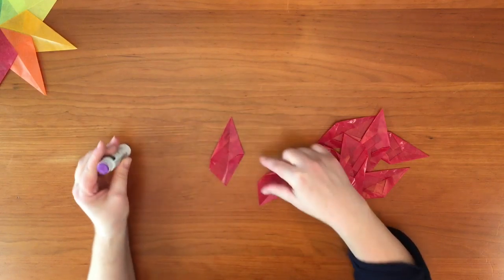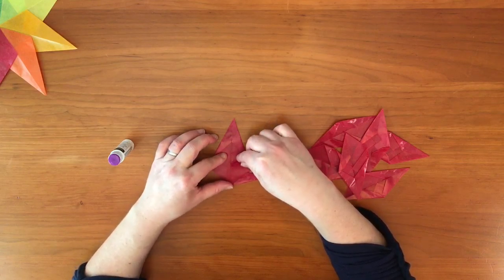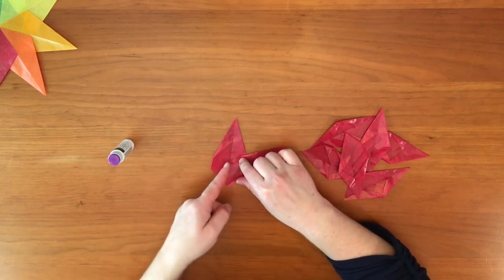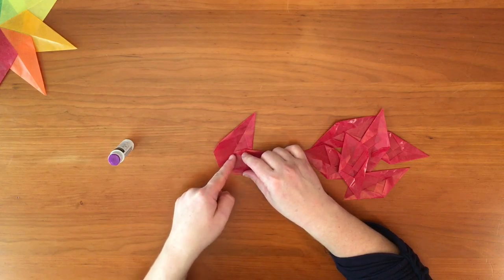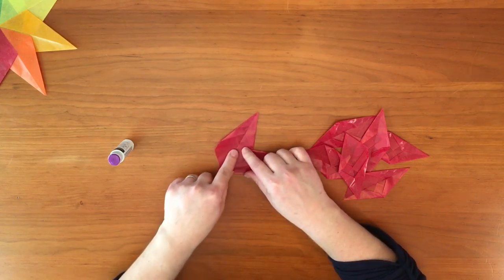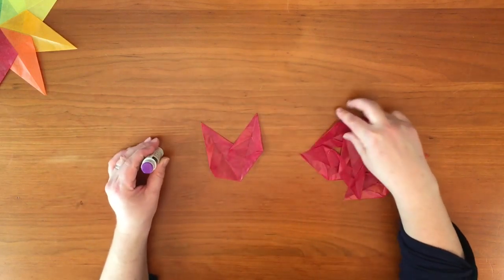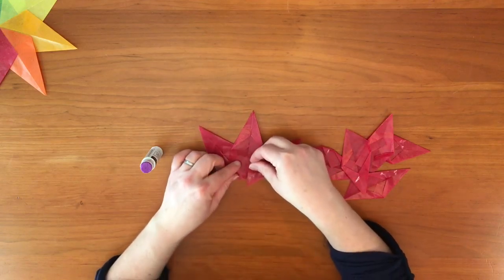A little glue here. Just like with the basic star, I want my points to be touching, and this edge of the top star to be lined up along the center line of the bottom star. I repeat all the way around.